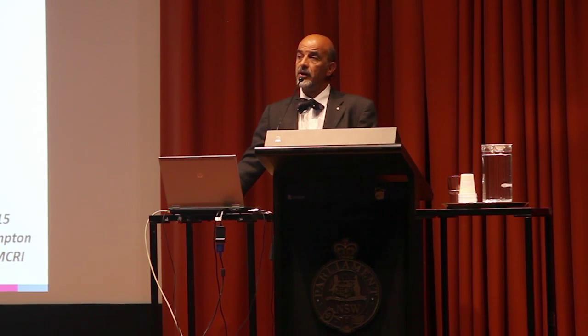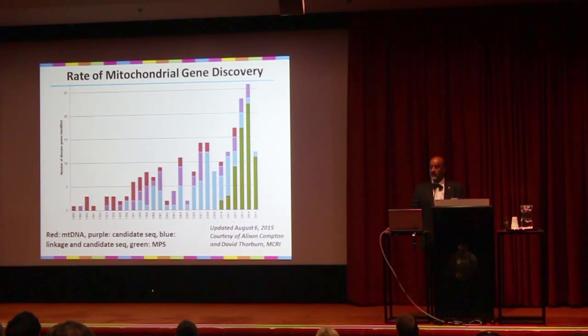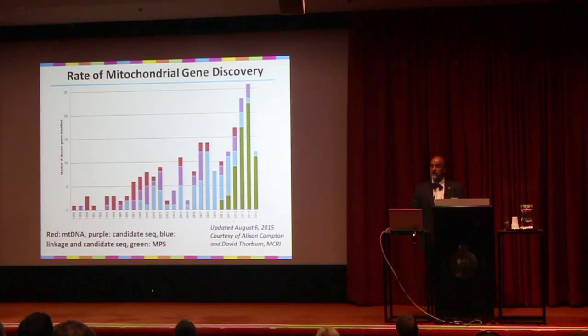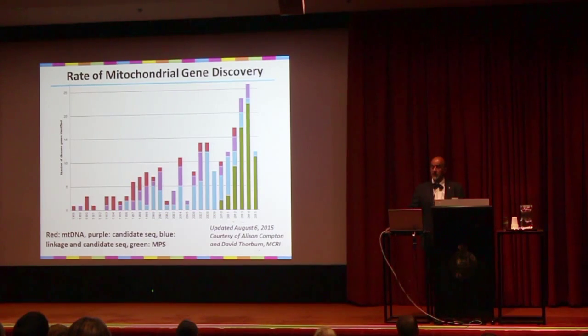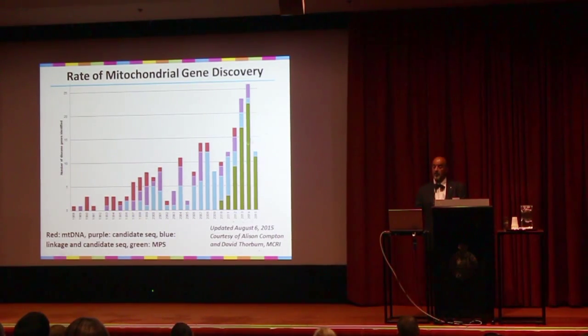This slide shows how next-generation sequencing has already impacted mitochondrial gene discovery. Different colored boxes show different approaches used over the years, becoming more sophisticated over time. The bars in green represent genes identified using next-generation sequencing technologies, which have only been available for the last four or five years. With these technologies has come a dramatic increase in new mitochondrial genes being discovered year by year, including quite a number discovered here in Australia.